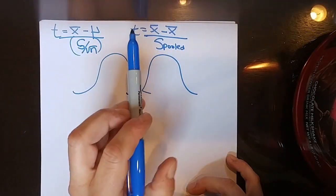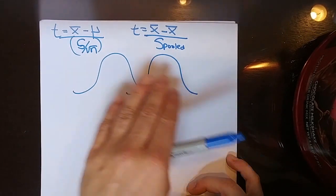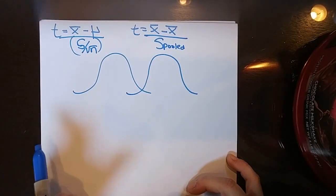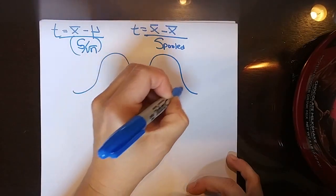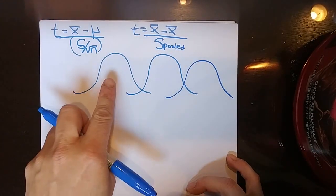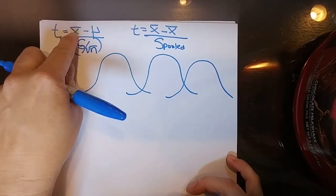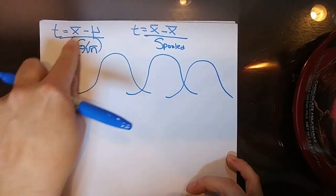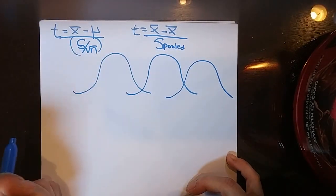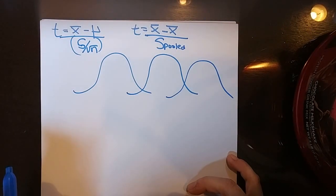What we're doing with an ANOVA is adding a third distribution. We're still somewhat doing the same pattern — what did I get minus what I thought I'd get, divided by the standard deviation of whatever it is I'm measuring — but it got a little more complicated because we now have three different distributions.